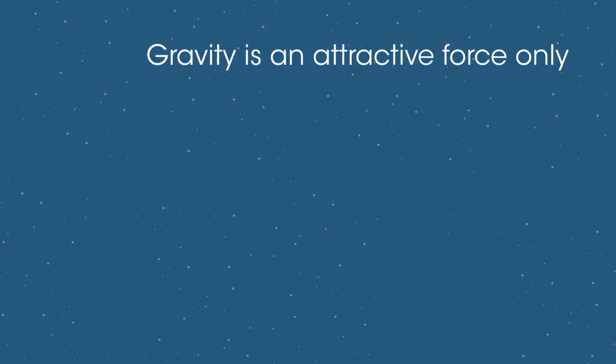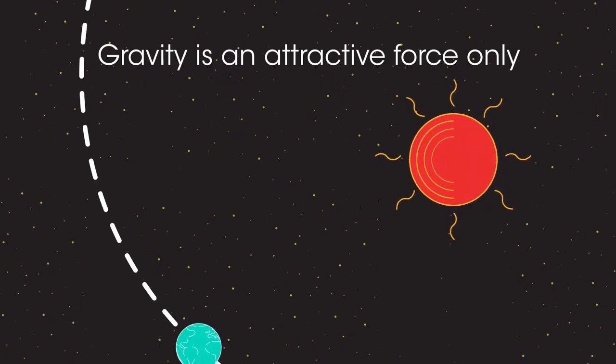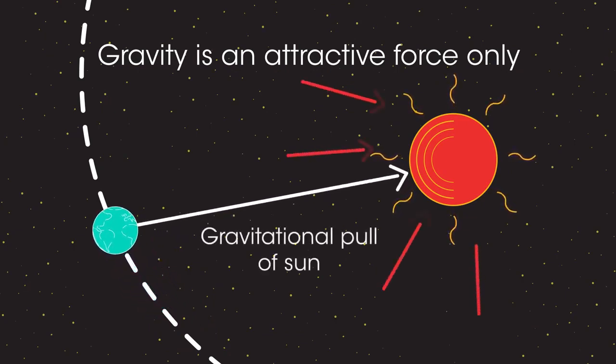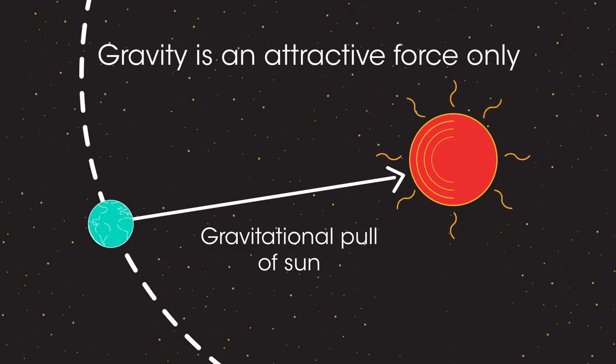Gravity is an attractive force only and acts weaker over long distances. It's the gravitational force between the earth and the sun which keeps the earth in orbit. Without this force, the earth would continue to travel in a straight line.